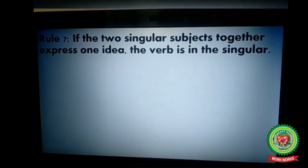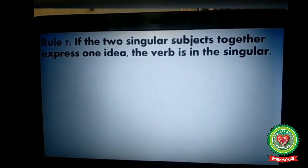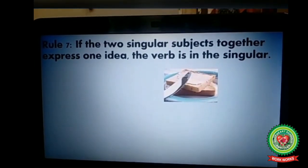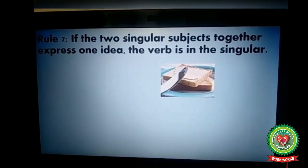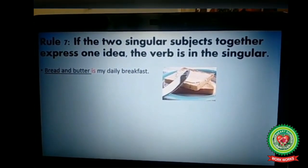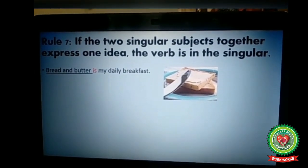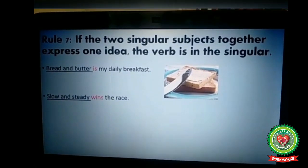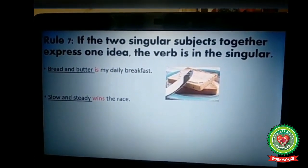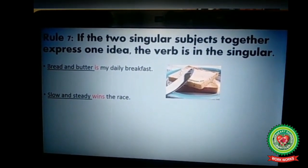Next rule: if two singular subjects together express one idea, the verb is in singular form. For example, 'Bread and butter is my daily breakfast' — bread and butter expresses one idea, so singular verb 'is.' Another example: 'Slow and steady wins the race' — slow and steady expresses one idea, so singular verb 'wins.'